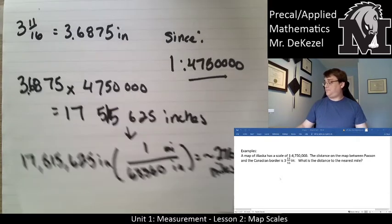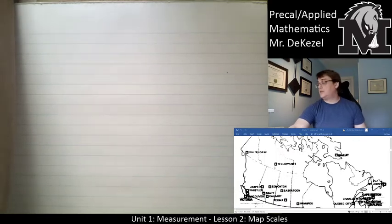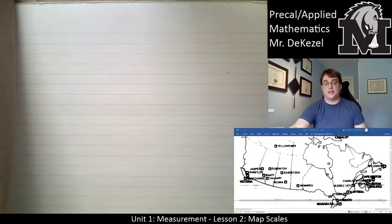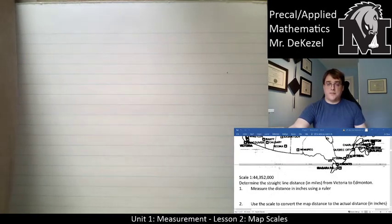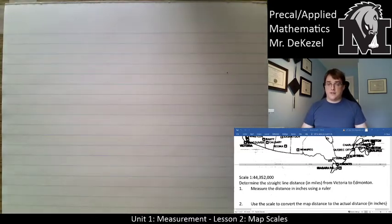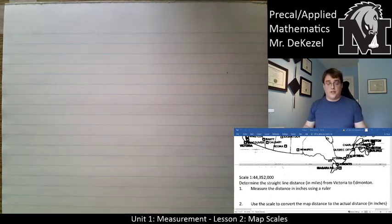We'll move on to an actual map. This is a blurry map of Canada. The assignment that you'll have has the whole map, the whole North America. This is just Canada. What we're going to do is, if the map scale is 1 to 44,352,000, this is in inches, we're going to determine the straight line distance in miles from Victoria to Edmonton. You're going to take a ruler and you're going to measure that distance on your map, so actually see how many inches it is. I have actually done that and it is...